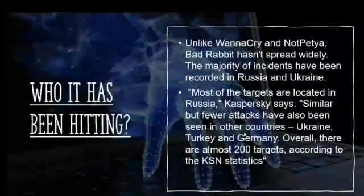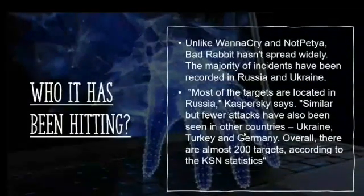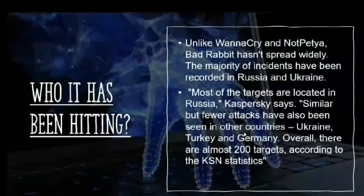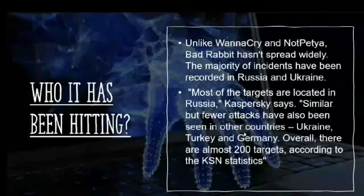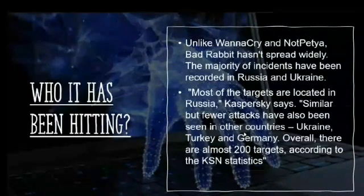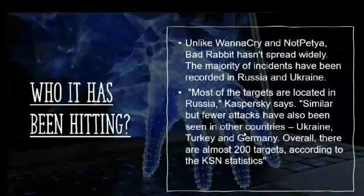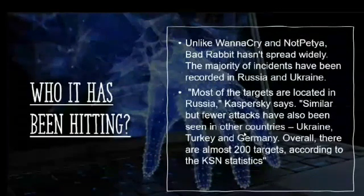Who has it been hitting? Most of the organizations hit by the ransomware are Russian, with similar but fewer attacks seen in Ukraine, Turkey, and Germany. One of the most high-profile Russian targets is the Interfax news agency, which announced on Facebook that its servers had been hit. It was not as widely spread as NotPetya and WannaCry. Overall, there are almost 200 targets according to KSN statistics.